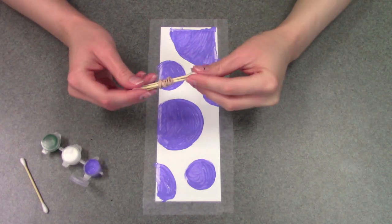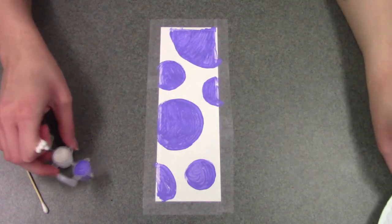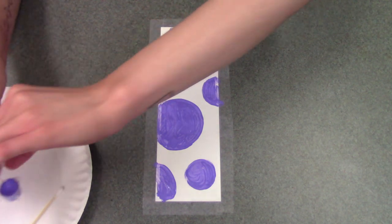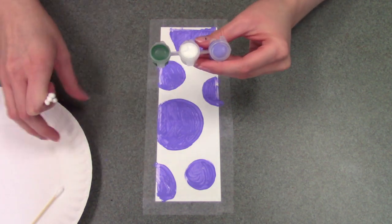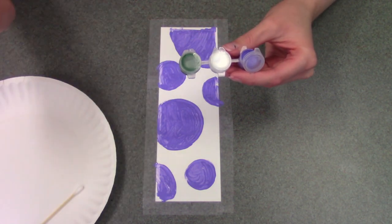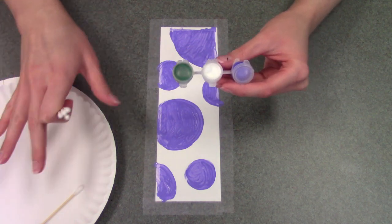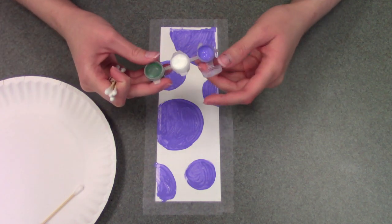And then next you're gonna take your clump of four q-tips together and the white paint. So you can open up the white paint and I'm gonna get a paper plate for this to kind of continue to control the mess so that I can mix the purple and the white together.